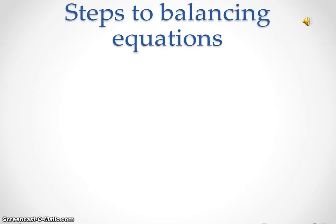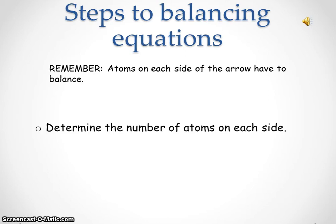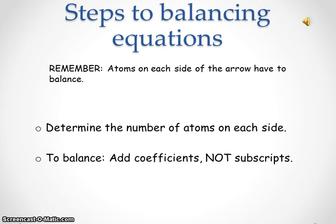Steps to balancing equations. Remember, atoms on each side of the arrow have to balance. Step one: determine the number of atoms on each side. Step two: to balance it, you need to add coefficients, not subscripts.